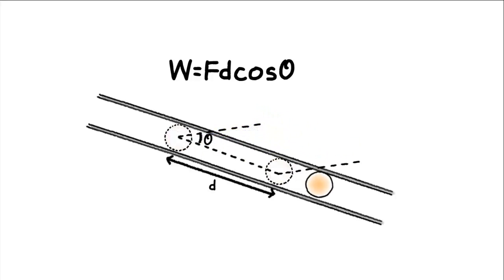F is the magnitude of the force exerted on the object. D is the distance traveled by the object during the time when the force is exerted. Theta is the angle between F and d.